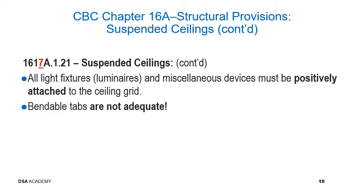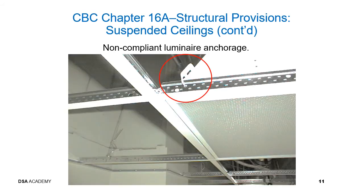All light fixtures and miscellaneous devices must be positively attached to the ceiling grid. Bendable tabs are not adequate, as shown in the next slide. This photo shows a light fixture supported to the ceiling grid with a bendable tab — this is a non-compliant anchorage condition.